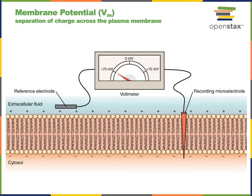Voltage, also known as electric potential difference, is the energy stored in the separation of positive and negative charges. This separation of charges creates a driving force known as the electromotive force that will drive the movement of charged particles. The membrane potential is a separation of charges across the plasma membrane. A voltmeter is a tool that can be used to measure the membrane potential of a cell by placing a recording mini-electrode in the cytosol and a reference electrode in the extracellular fluid.